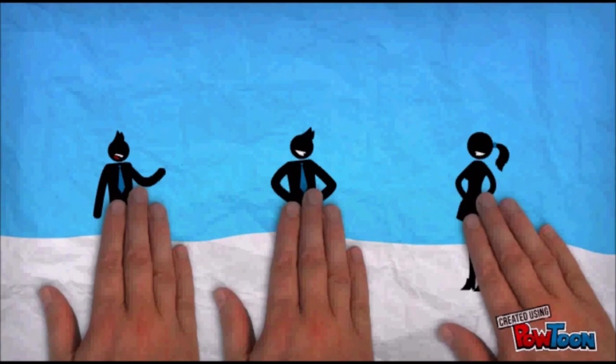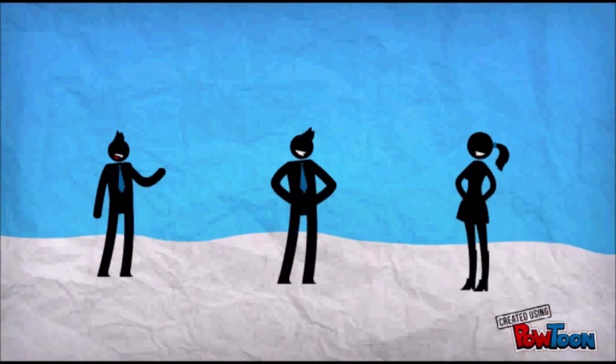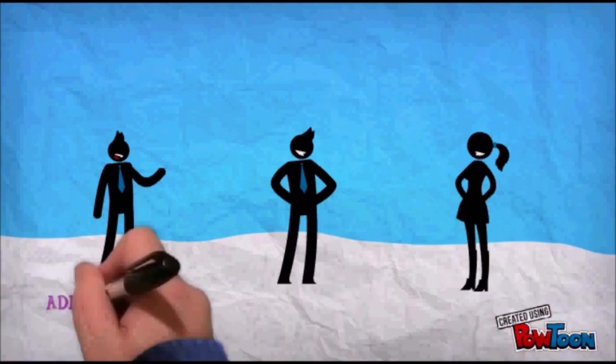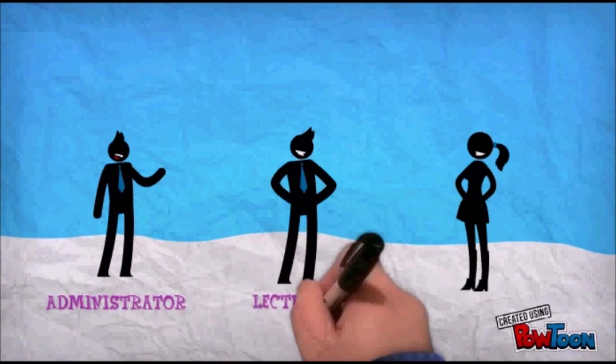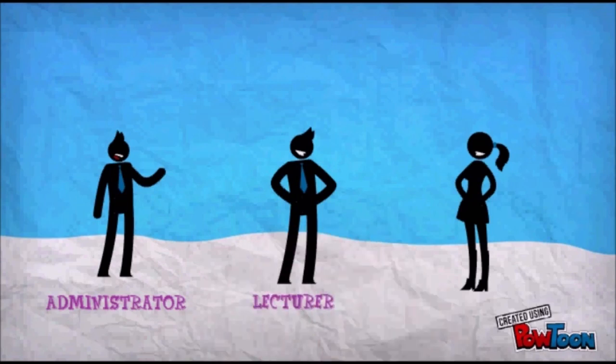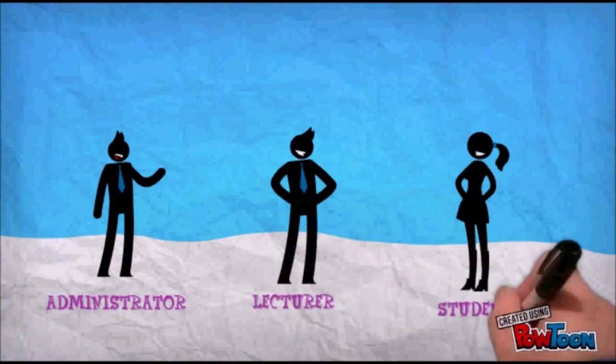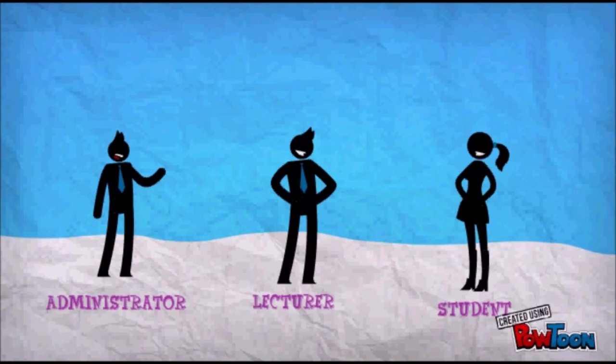The system is able to function according to three different user roles: administrator, lecturer, and student. These roles and privileges follow access control and authorization principles.